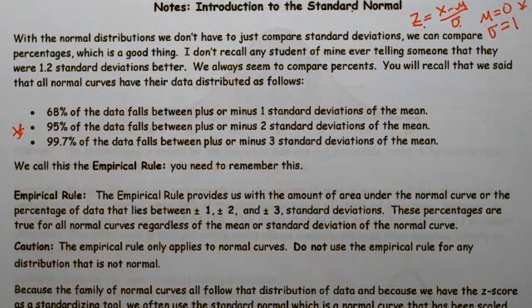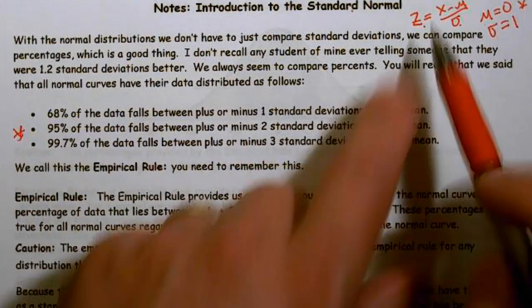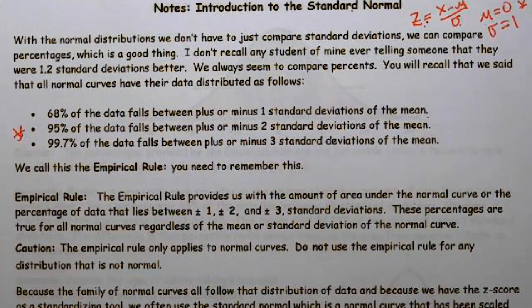Please note: z-scores can be calculated for any distribution — it doesn't matter what it looks like or whether it's normal. However, the empirical rule and those percentages only apply to the normal distribution. Only apply the empirical rule to the normal distribution; if the distribution isn't normal, we can't use it.